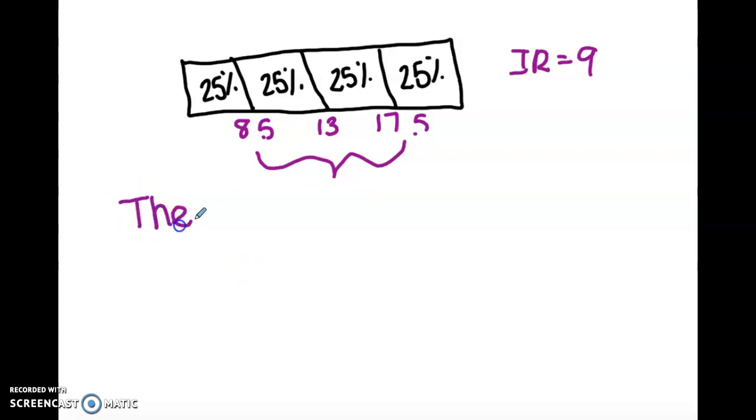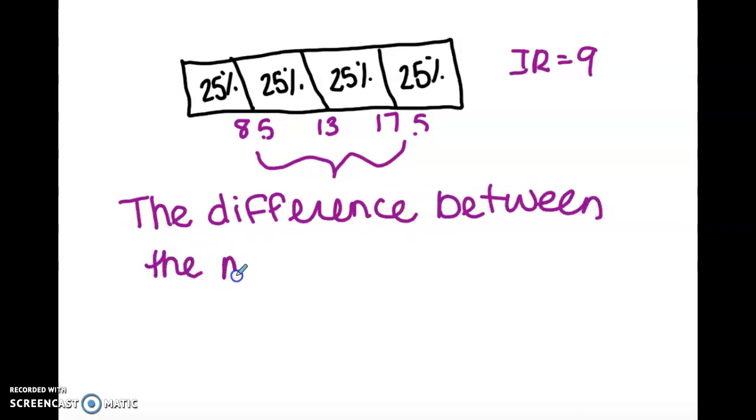So the difference between the middle 50% is no more than 9.